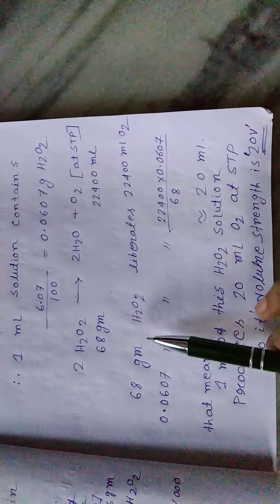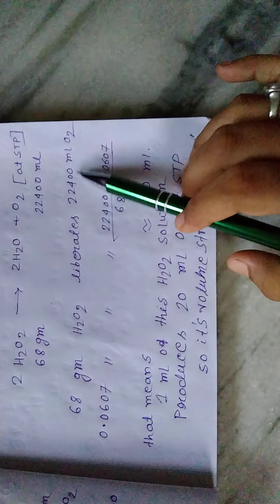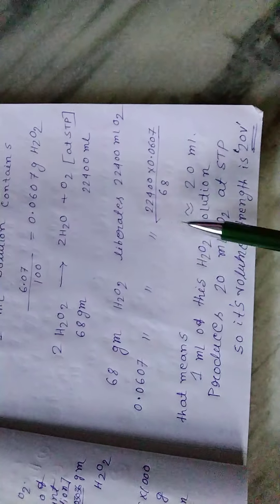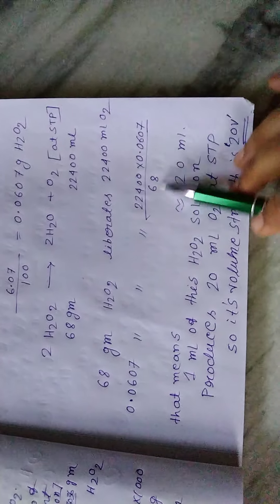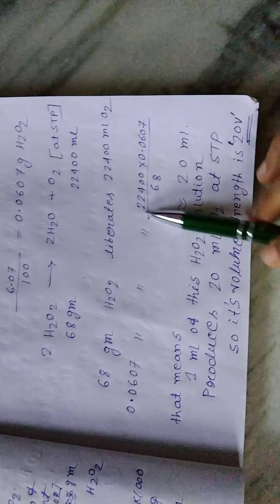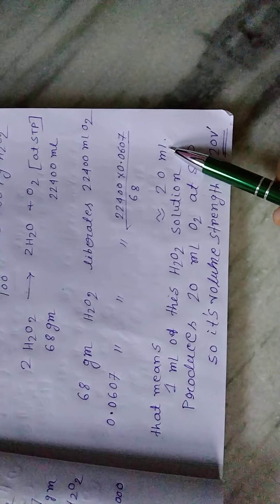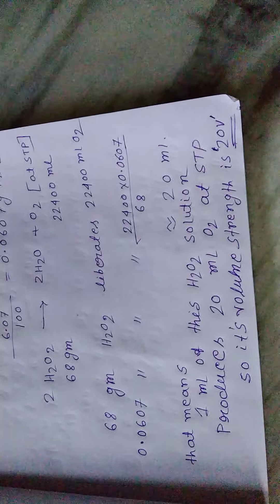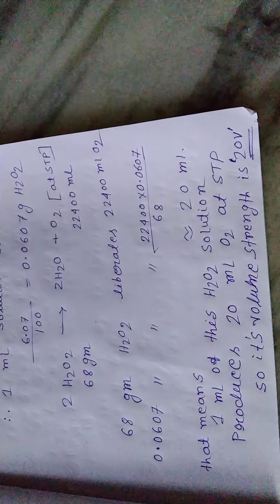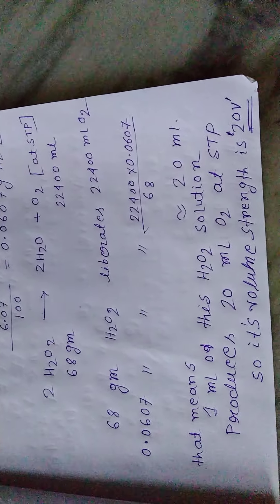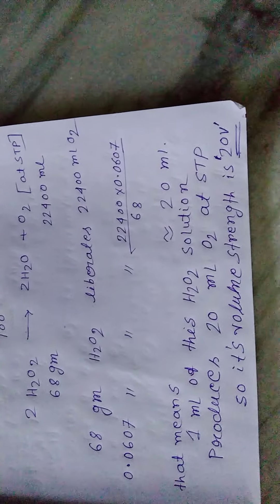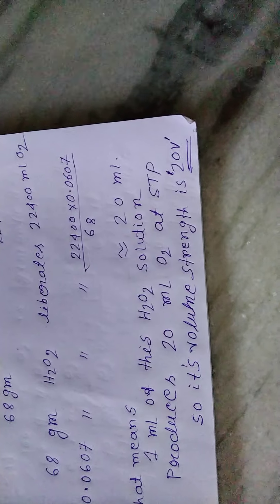So 68 gram H2O2 liberates 22,400 mL O2. Now we calculate how much O2 is liberated by 0.0607 gram H2O2. By calculating this, we get approximately 20 mL of oxygen from 1 mL of this H2O2 solution. Since from 1 mL of any H2O2 solution the volume of O2 produced equals the volume strength, 1 mL of this H2O2 solution gives 20 mL O2 at STP. So its volume strength is 20 V.